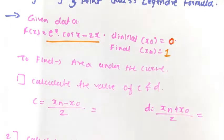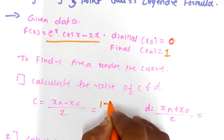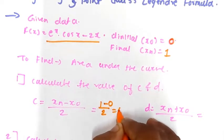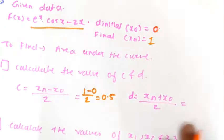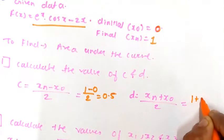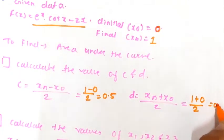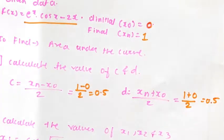We have to find the area under the curve. For that, we have to find out the values of c and d first. The formula for c is xn minus x0 divided by 2, which will be equal to 1 minus 0 divided by 2, which is equal to 0.5. Similarly, d is equal to xn plus x0 divided by 2, so it will be 1 plus 0 divided by 2, which is also equal to 0.5.